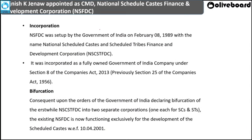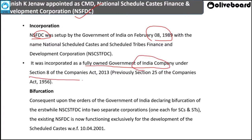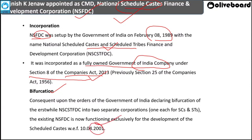NSFDC was incorporated by the Government of India in 1988 as a fully owned Government of India company under Section 8 of the Companies Act. Originally it was the Scheduled Castes and Scheduled Tribes Finance and Development Corporation, but it was later bifurcated into two separate corporations in 2001. Currently NSFDC only looks after Scheduled Castes finance, while a separate body handles Scheduled Tribes finance.